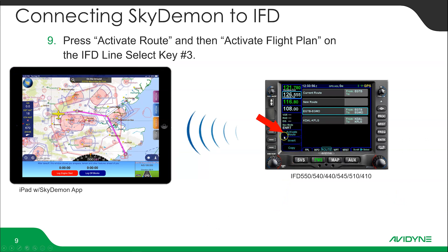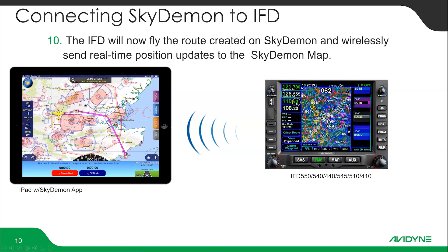Once that happens, press Activate Route on the IFD, then Activate Flight Plan will appear in the same spot to actually launch the flight plan and the active leg. At that point your flight plan will appear on the IFD, and it will fly the route while continuing to send real-time position updates back to SkyDemon, so the own ship will show in the correct position on your moving map.